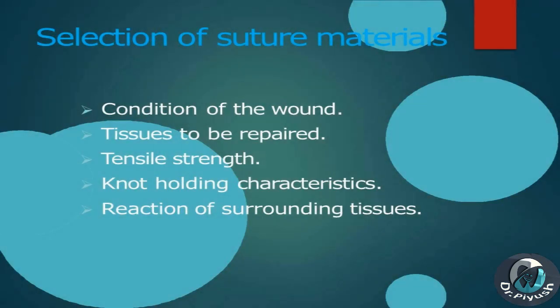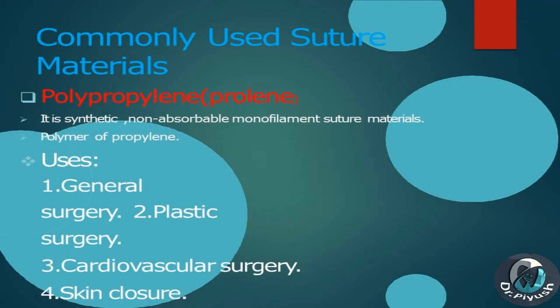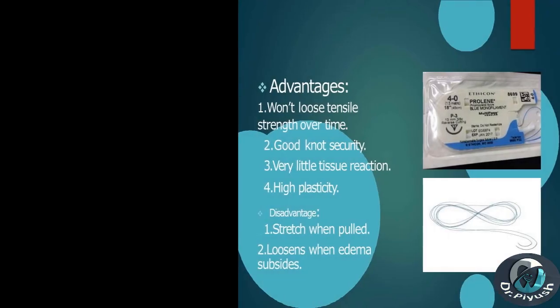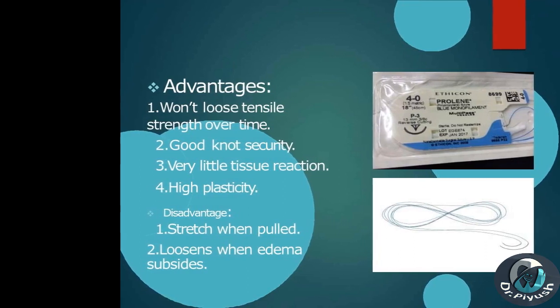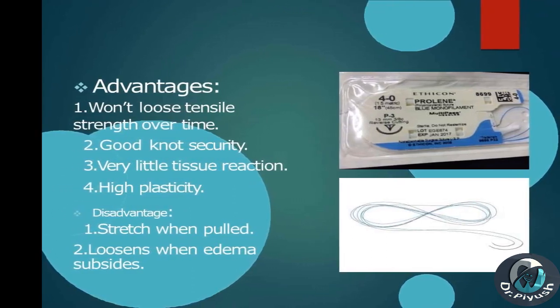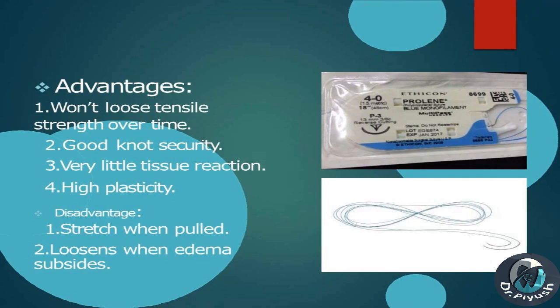Selection of suture materials depends on: condition of the wound, tissues to be repaired, tensile strength, knot-holding characteristics, and reaction of surrounding tissues. Polypropylene (Proline): synthetic, non-absorbable monofilament suture material, a polymer of propylene. Uses: general surgery, plastic surgery, cardiovascular surgery, skin closure. Advantages: won't lose tensile strength over time, good knot security, very little tissue reaction, high plasticity.